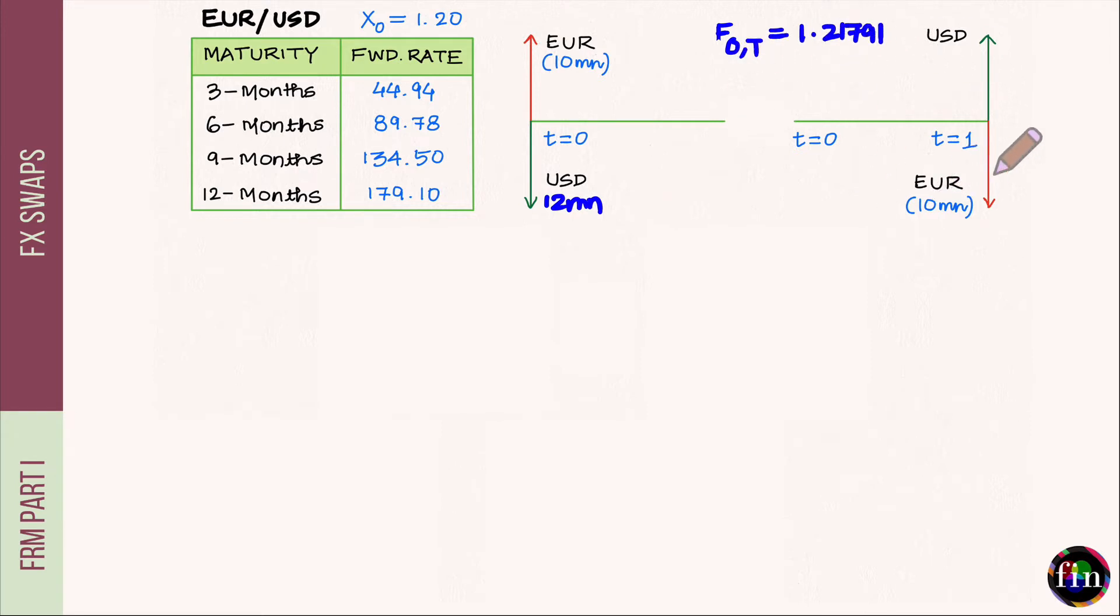If I am selling 10 million euros one year from today at the forward exchange rate, how much USD will I receive? It will be 1.21791 times 10, giving me 12.1791 million USD.